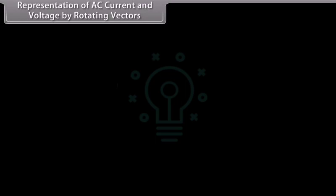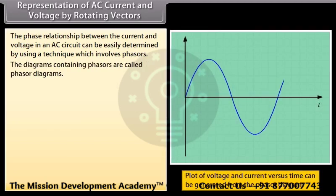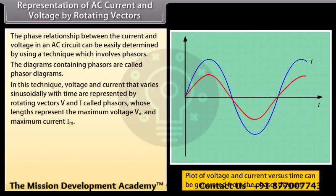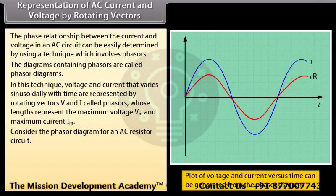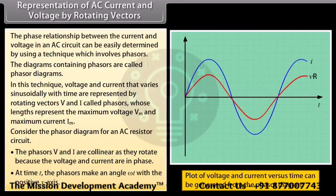Representation of AC current and voltage by rotating vectors: the phase relationship between current and voltage in an AC circuit can be determined using phasors. Diagrams containing phasors are called phasor diagrams. Voltage and current that vary sinusoidally are represented by rotating vectors V and I, called phasors, whose lengths represent maximum voltage Vm and maximum current Im. In a resistor circuit, phasors V and I are collinear since voltage and current are in phase, making angle ωt with the positive x-axis at time t.